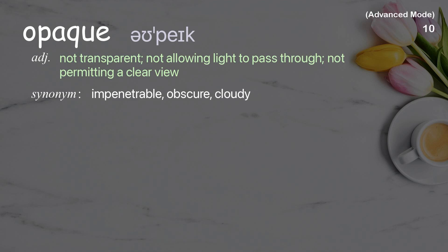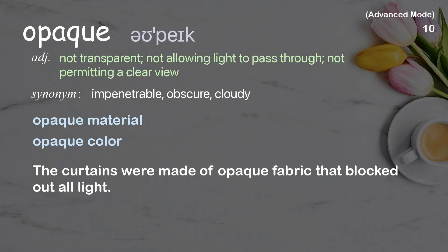Opaque. Not transparent, not allowing light to pass through, not permitting a clear view. Examples: opaque material, opaque color. The curtains were made of opaque fabric that blocked out all light.